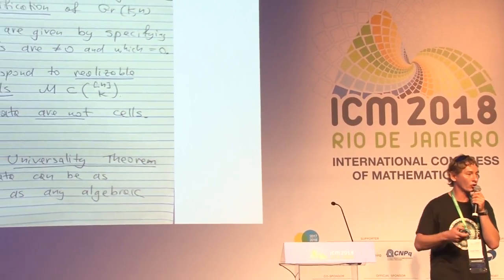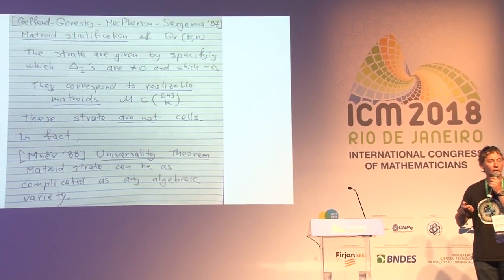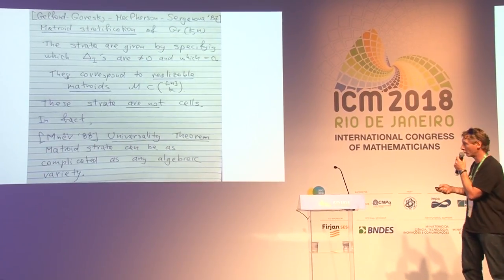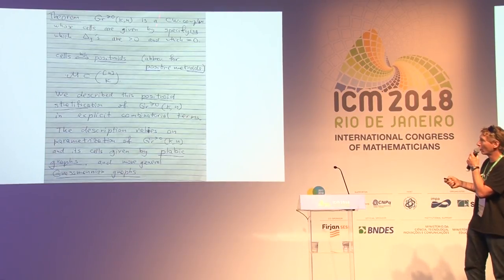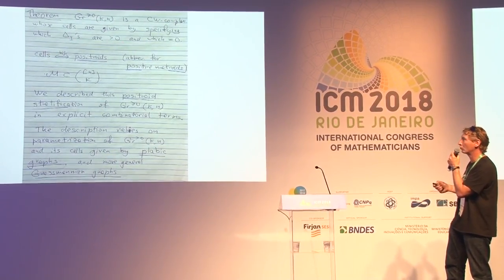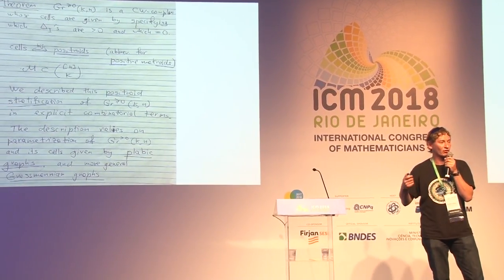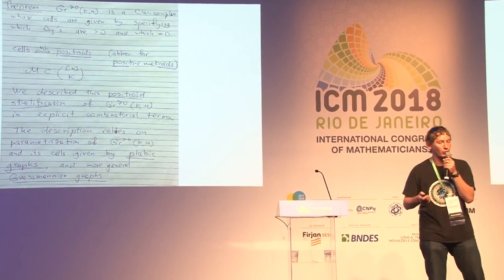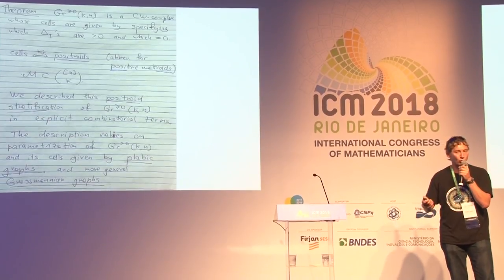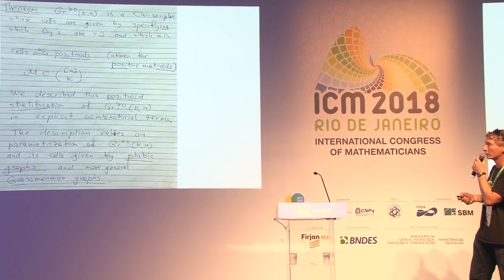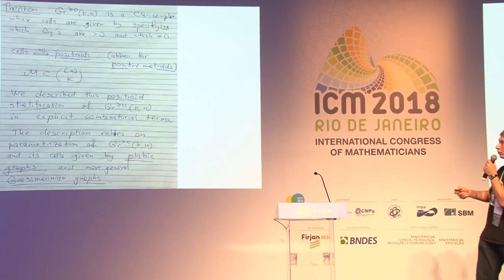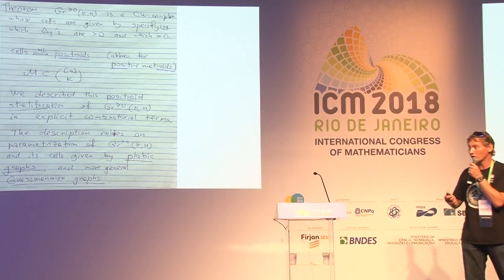But if you restrict this stratification to the non-negative part, it becomes manageable — not trivial, but describable. On the non-negative Grassmannian, if you subdivide by specifying which Plücker coordinates are strictly positive and which are zero, you get a CW complex: the strata are cells homeomorphic to open balls. We can describe them combinatorially; they correspond to what I call positroids — abbreviation for positive matroids. The set M is the set of all I such that the Plücker coordinate Δ_I is strictly positive.